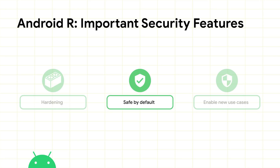We've started to look at various places where the platform can adopt a more safe-by-default stance. For example, we added one-time permissions for location, camera, and microphone — a huge win for users' privacy. We've continued to invest in Project Mainline to bring regular security updates of core platform components to the entire ecosystem. In Android R, we've expanded coverage of Mainline to include 12 new updatable modules, for example: DNS resolver, Neural Networks API, Wi-Fi stack, permissions controller, etc. We will continue to add more modules into Mainline in the future so that our users and their devices are always up-to-date and safe.